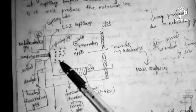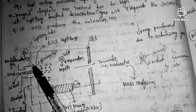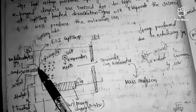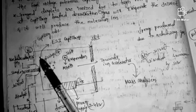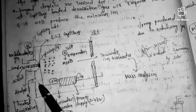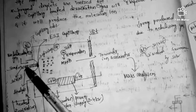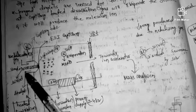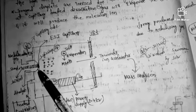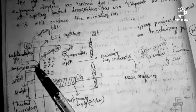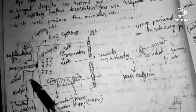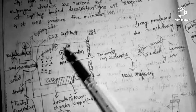Referring to the diagram: the sample is in the solvent, and nebulization gas — nitrogen gas — is used. The electrospray ionization capillary has a high voltage tip at its end, where ionization and evaporation occur. This is the ionization chamber.